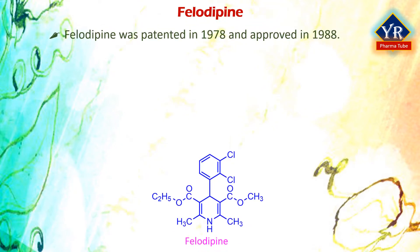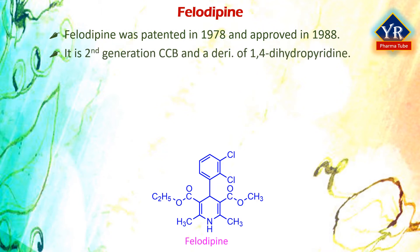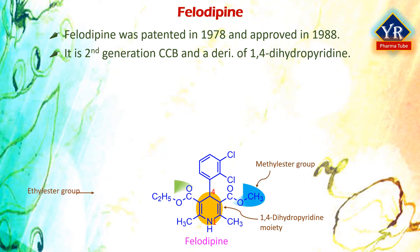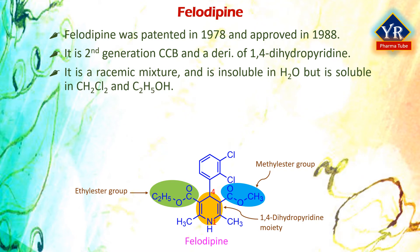Felodepin was patented in 1978 and approved for medical use in 1988. It is a second generation calcium channel blocking agent and a derivative of 1,4-dihydropyridine. It is commonly used as an anti-hypertensive agent, that is in the treatment of high blood pressure. It is the mixed diester in which it has methyl and ethyl ester groups of 4,2,3-dichlorophenyl, 2,6-dimethyl, 1,4-dihydropyridine, 3,5-dicarboxylic acid. It is a racemic mixture and is insoluble in water but is soluble in dichloromethane and ethanol.